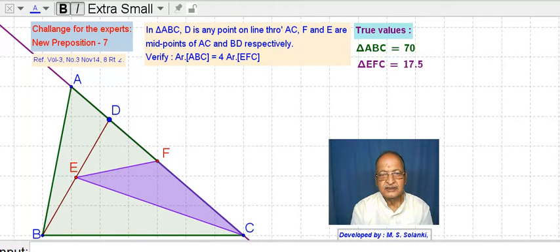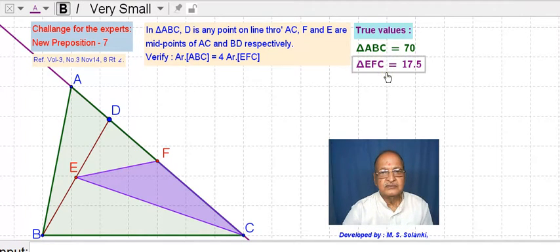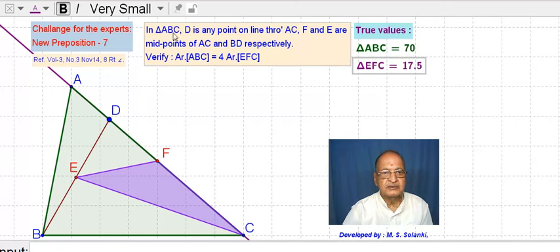It is published by Azim Premji University. The problem is: in triangle ABC, D is any point on the line drawn through AC.